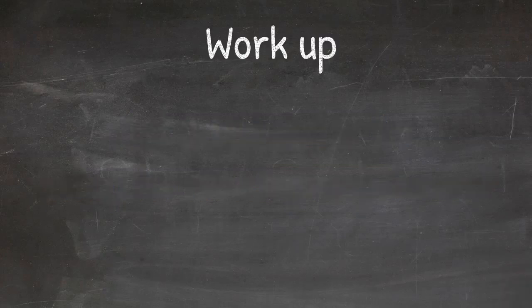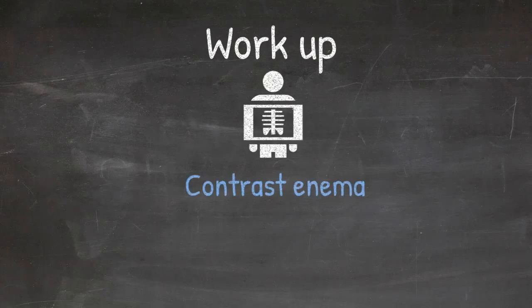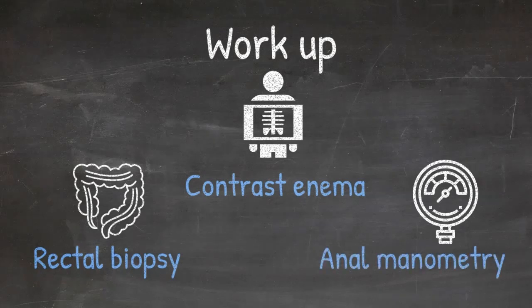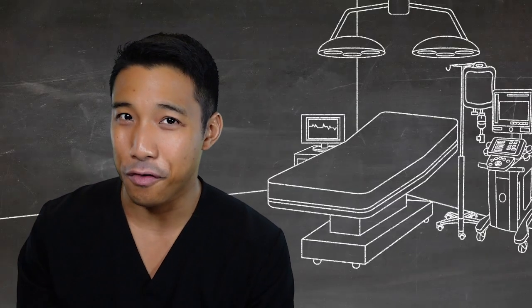How do you work up Hirschsprung disease? The three studies that should be considered for evaluating for Hirschsprung disease include contrast enema, rectal biopsy, and possibly anorectal manometry. We typically use a water-soluble contrast enema.